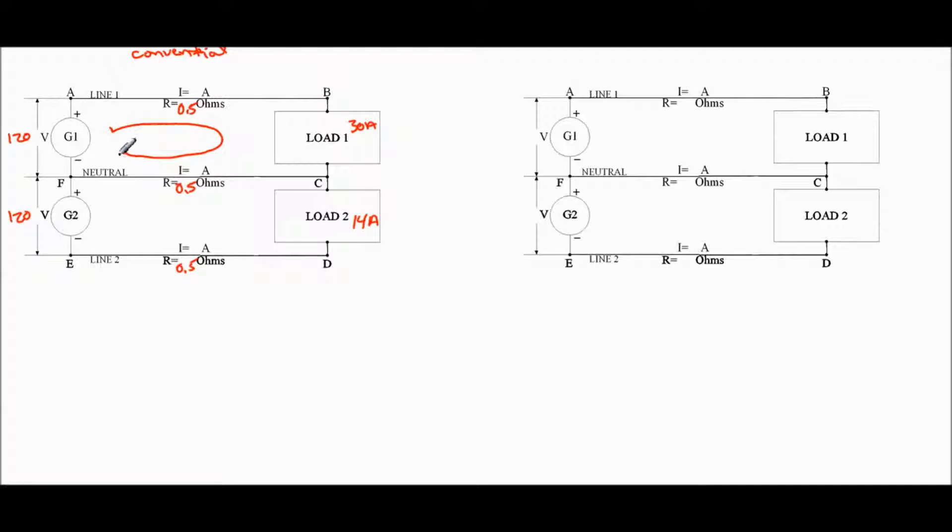So if we draw a loop, positive to negative, that would mean that across this wire, it would go like this. And we'd see that current is going this way. So current's coming this way.